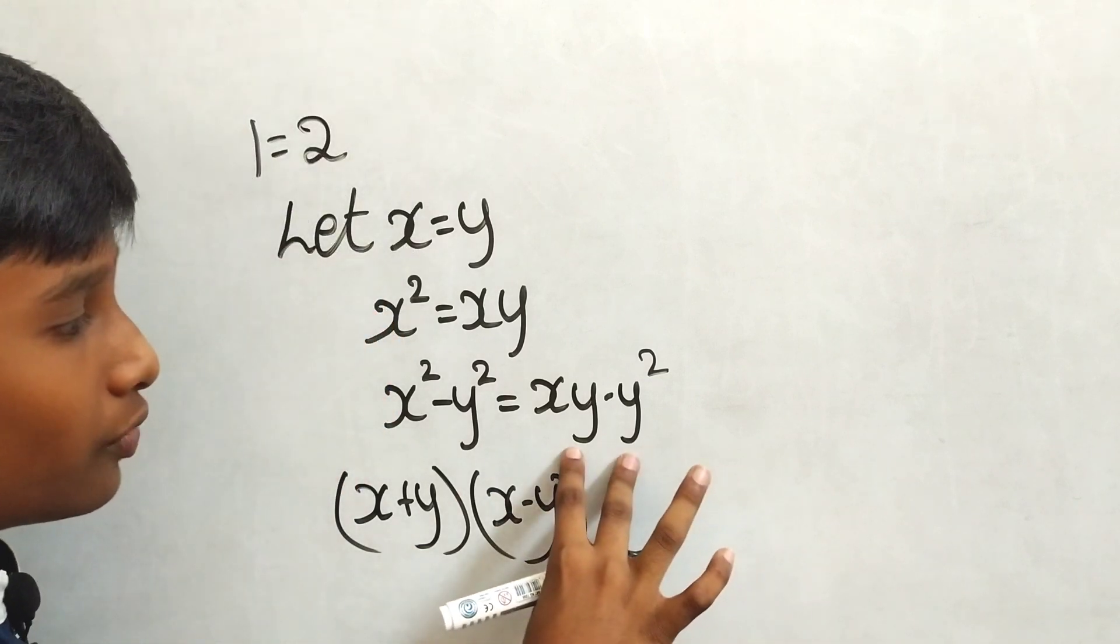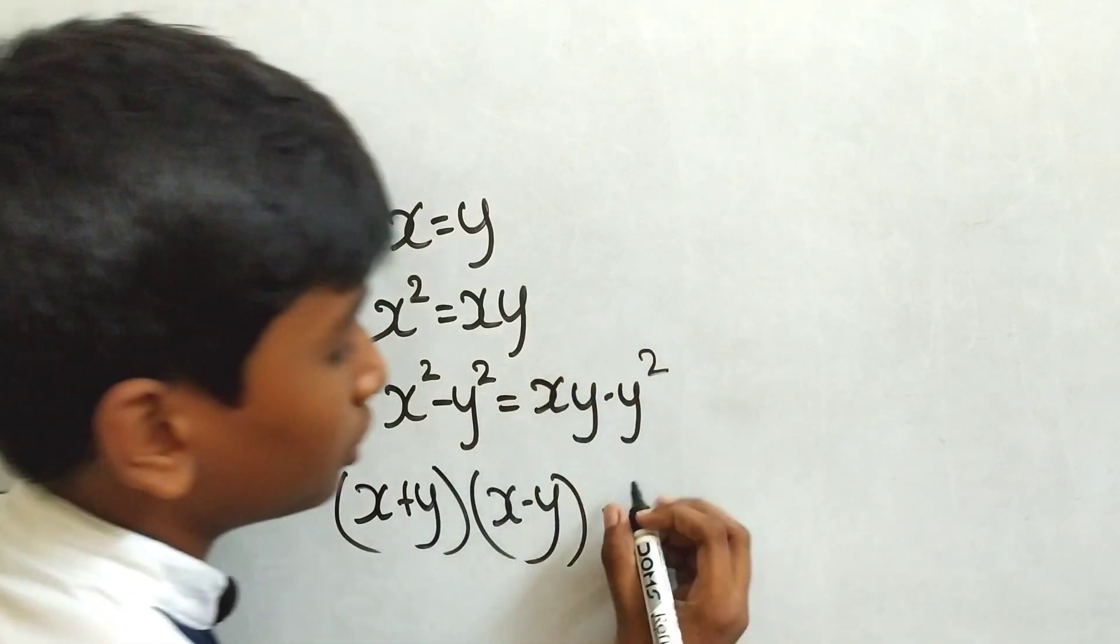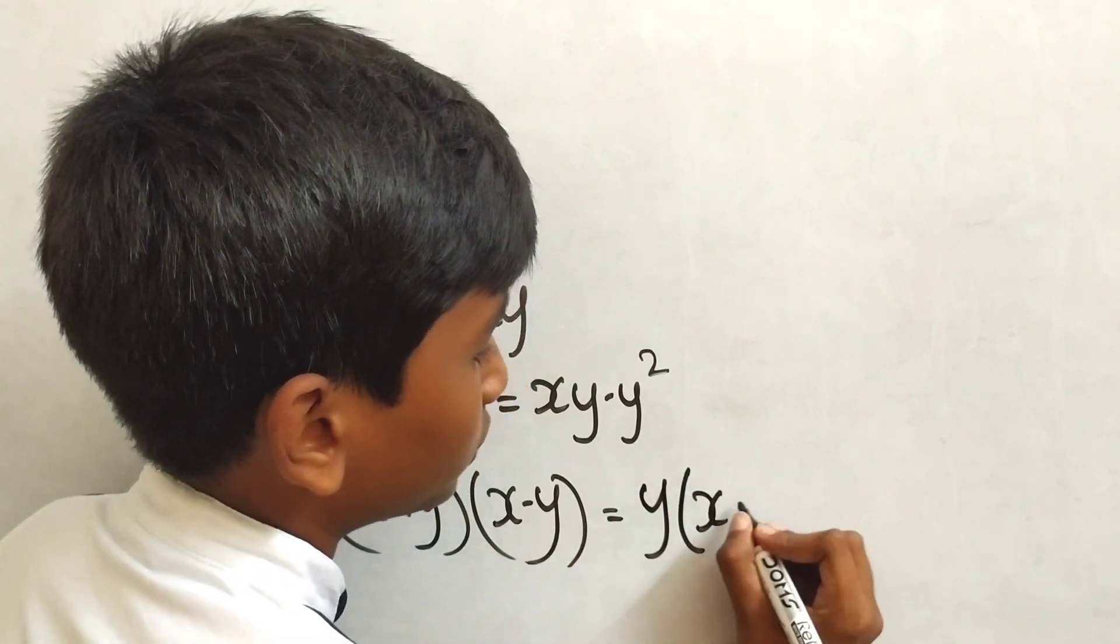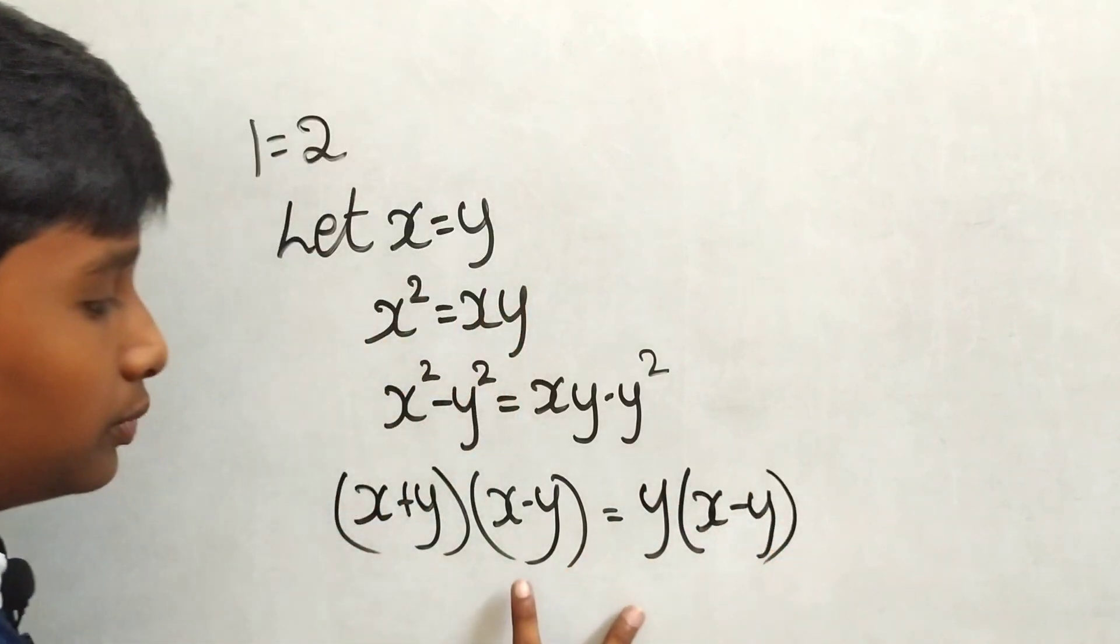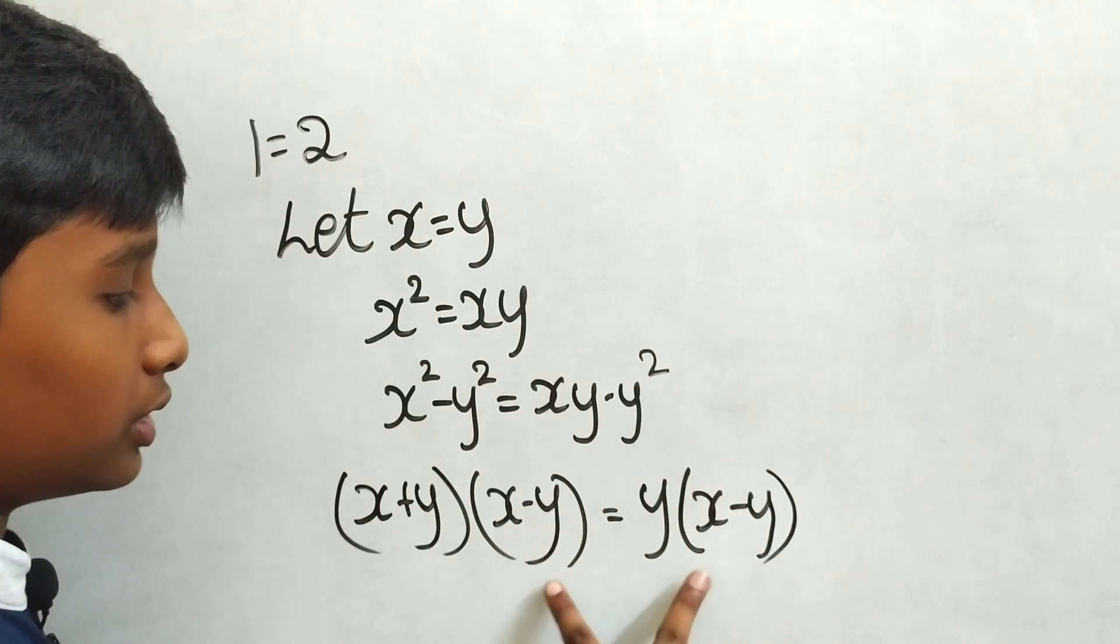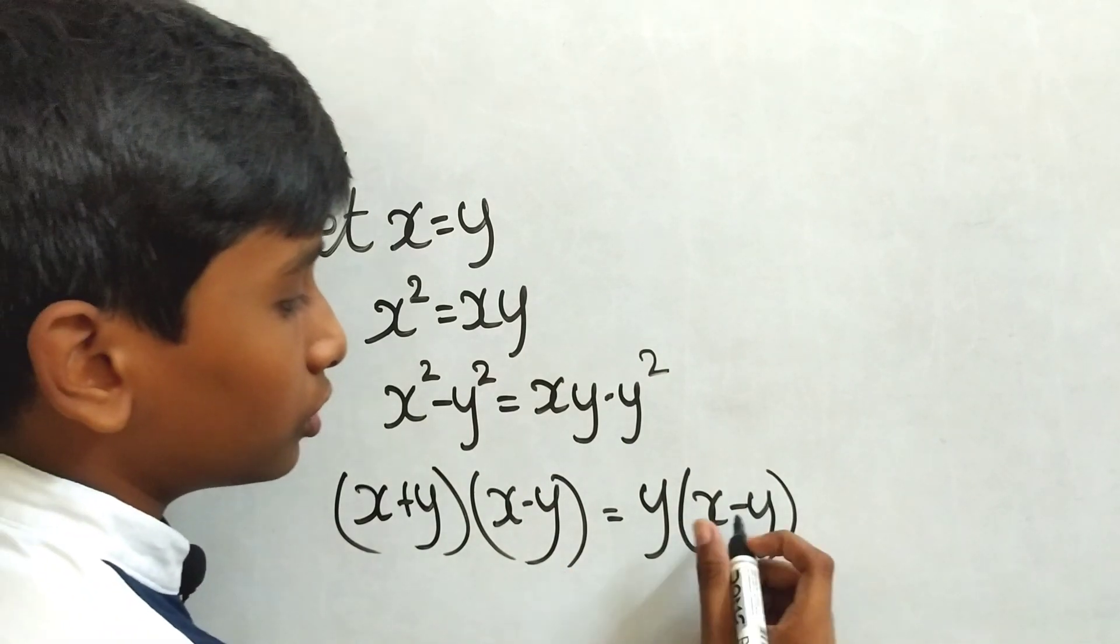Here you can observe that y is common in both terms. So take the common y: y(x minus y). Here you can observe that (x minus y) is common in both. So cancel these two.